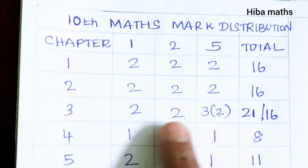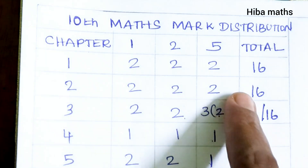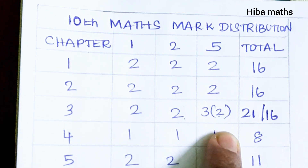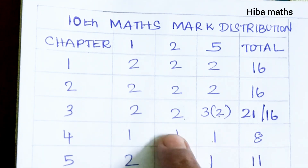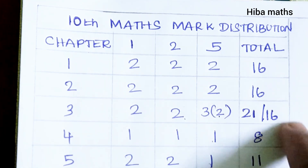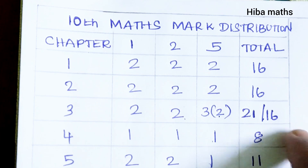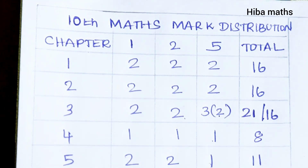Now you have to learn 3 lessons. The marks breakdown includes 3, 2, 5, 6, 7, and 5-mark questions. The first 3 chapters are complete. Looking at the marks: 7 five-marks, 6 two-marks. The total marks are complete — 16, 16, 16. The first 3 chapters are complete, and you can skip the exercise.